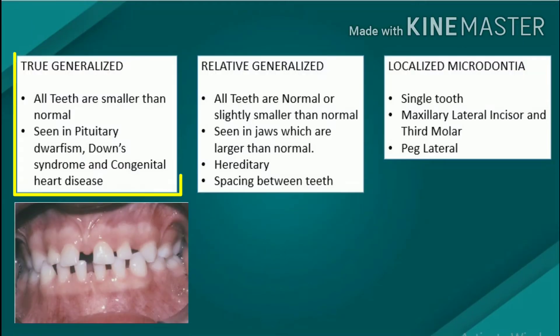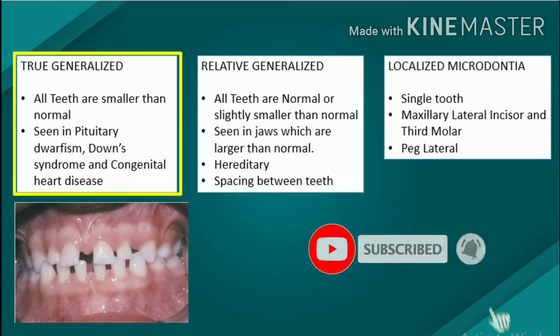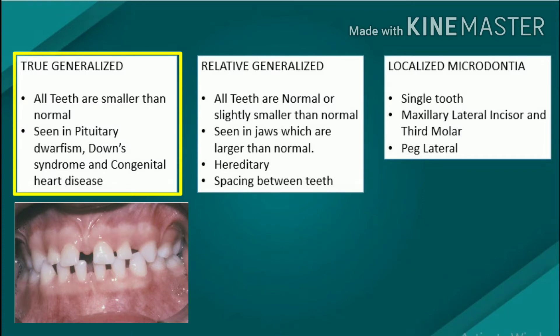In true generalized microdontia, all the teeth are smaller than normal. Aside from its occurrence in some cases of pituitary dwarfism, Down syndrome, and congenital heart disease, this condition is exceedingly rare. The teeth are reportedly well formed, merely small.